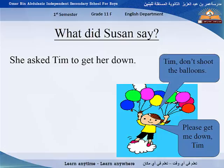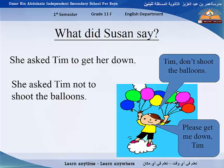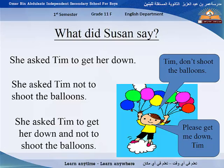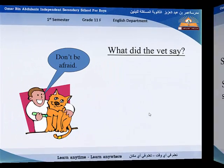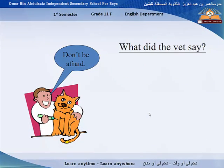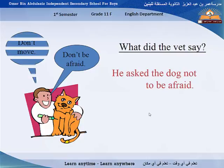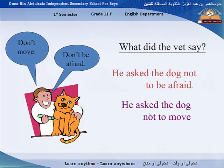'Do not shoot the balloons.' Now the difference is clear. 'Don't be afraid.' What did the vet say? She asked the dog not to be afraid. 'Do not move.' He asked the dog not to move — not to be afraid and not to move.